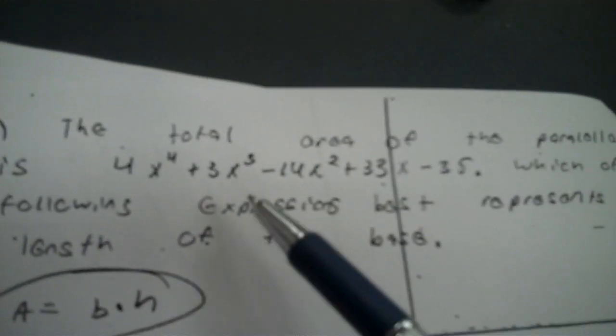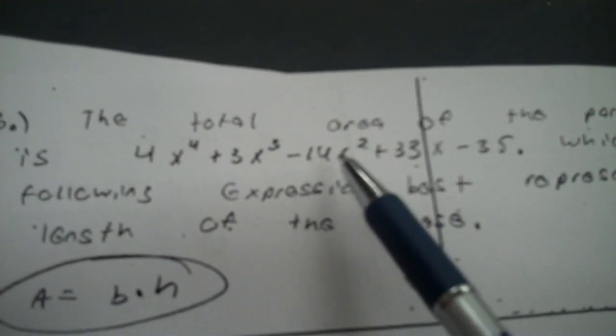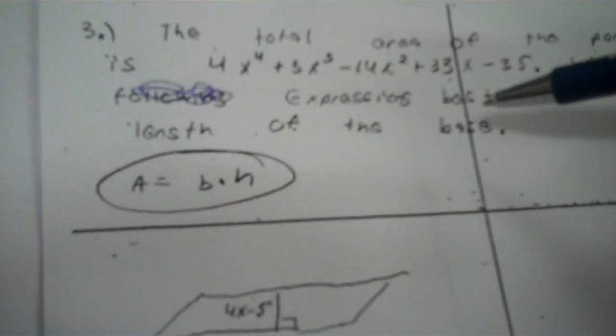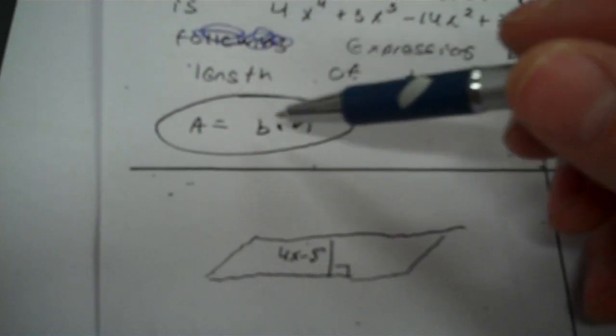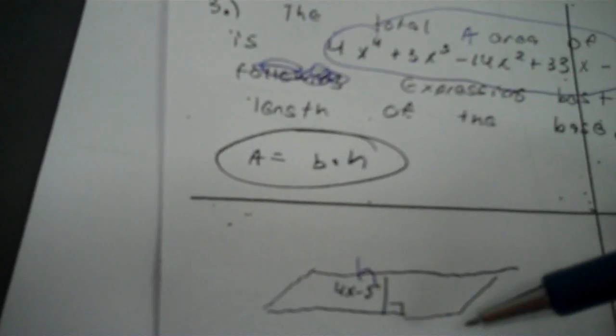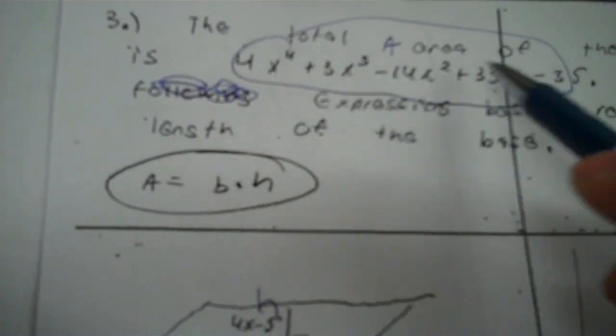Number three: the total area of the parallelogram is represented by the expression 4X to the fourth plus 3X to the third minus 14X squared plus 33X minus 35. Which expression represents the length of the base? Area is base times height. This is my area, and I have my height. To find the base, I do the opposite of multiply, which is divide. To divide algebraic expressions, we use synthetic division. The area coefficients represent my dividend.